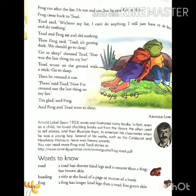Todd and Frog sat and did nothing. Todd और मेंढक दोनों बैठ गए और कुछ भी नहीं किया. Then Frog said, Todd, it's getting dark. तभी मेंढक ने कहा, Todd बहुत अंधेरा हो गया है. We should go to sleep. हमें जाके सो जाना चाहिए. Go to sleep? shouted Todd. That was the last thing on my list! सो जाओ, चिल्लाकर बोला — यह तो मेरी सूची का अंतिम, आखिरी काम था.